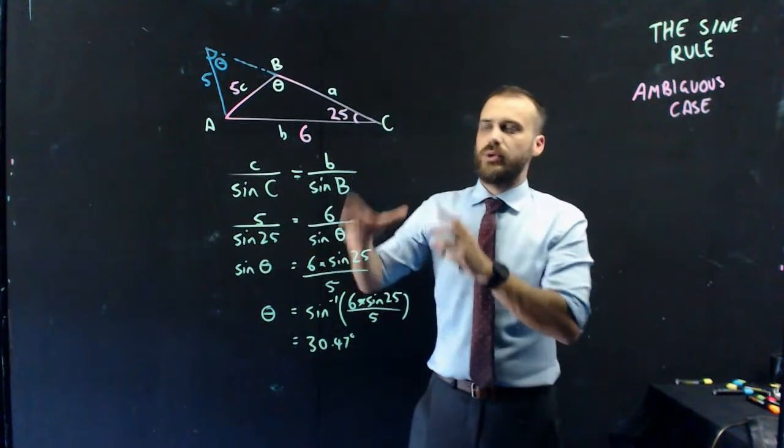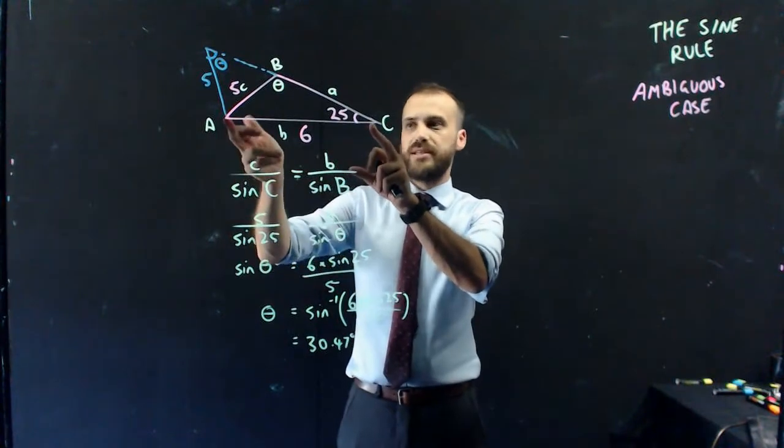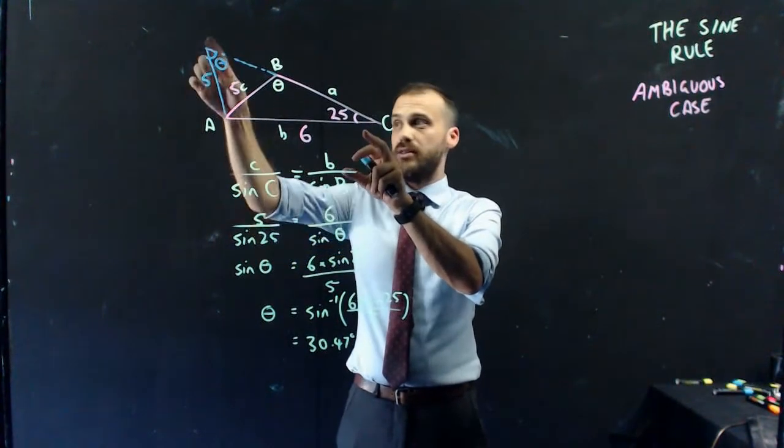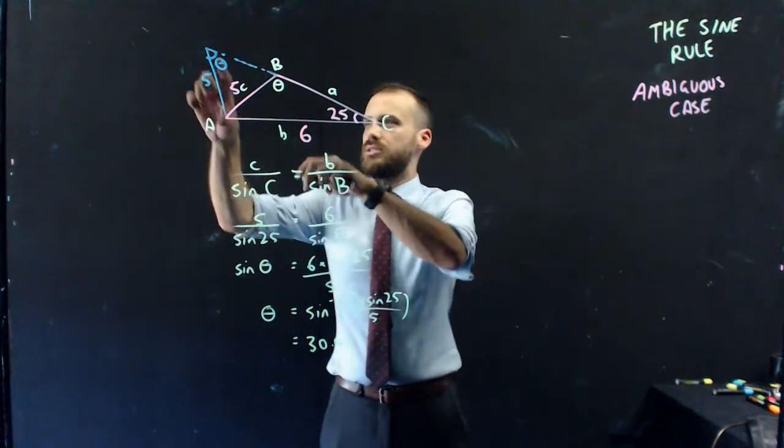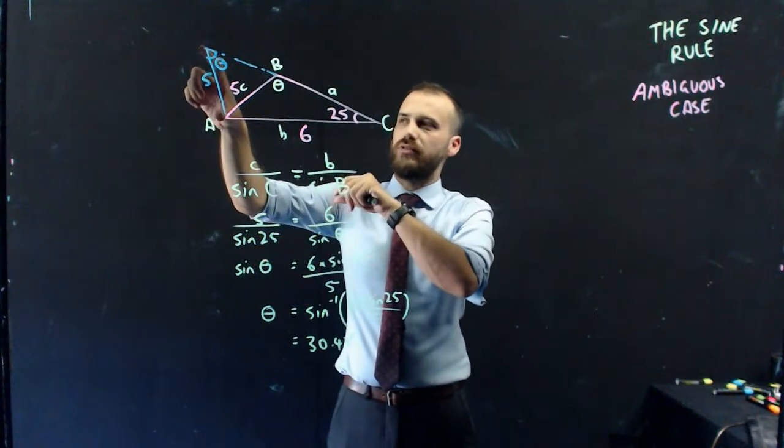Now, what have I done? Well, this triangle still has a base of 6, the pink one and the blue one. It still has an angle of 25, the pink one and the blue one. It still has this angle of 5.